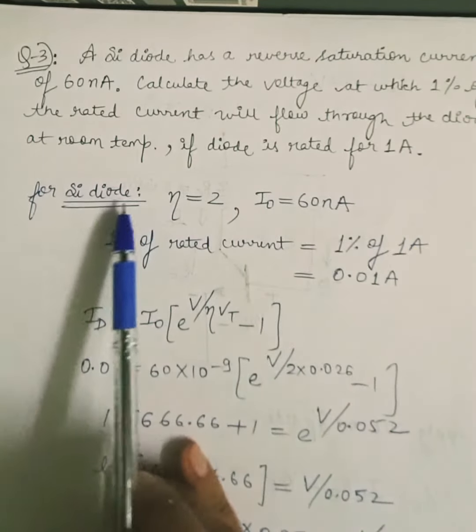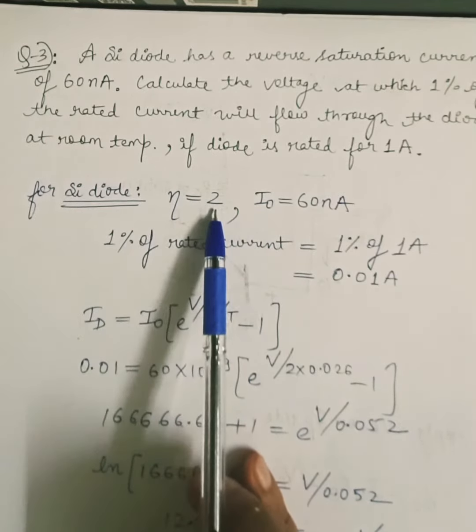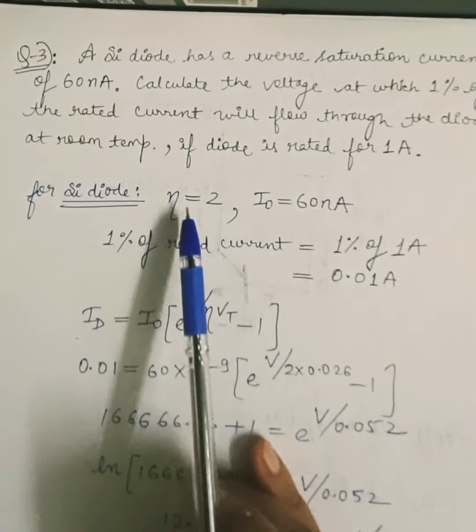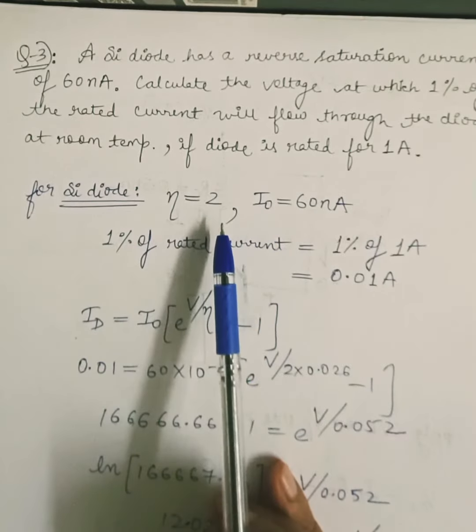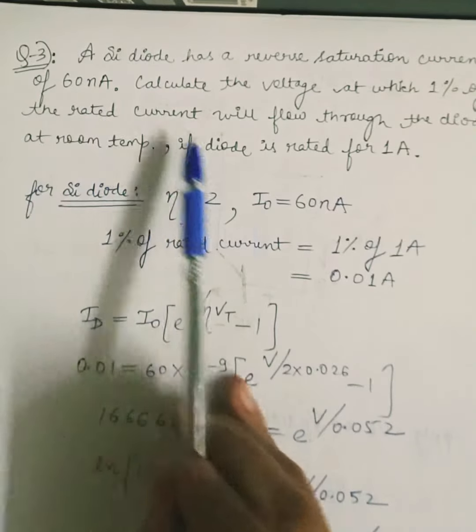First of all for silicon diode we know that the ideality factor or the eta will be equal to 2. But if the diode is of germanium we will have to take the value of eta equal to 1. So here eta equals 2 but the reverse saturation current as it is given in the question is 60 nanoampere.